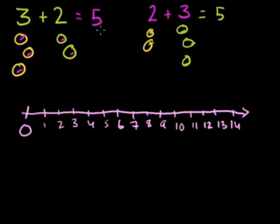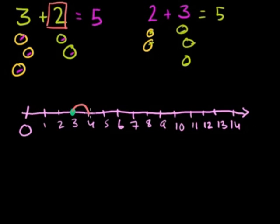Let's use the number line for these addition problems. As a bit of review, 3 plus 2 means starting at 3 and going 2 greater — moving to the right by 2. So we go up by 1, then up by 2, and we end up at 5, which is exactly what we got before. If we have 3 lemons and add 1 lemon we have 4, add another lemon we have 5 — or lime, or tart pieces of fruit.